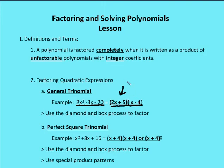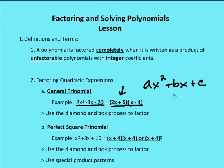Let's talk about ways to factor polynomials. First is factoring quadratic expressions — typically we'll see a general trinomial, and the example here is 2x squared minus 3x minus 20, which is in standard form ax squared plus bx plus c. To factor this general trinomial, you're going to use the diamond and box process, which we've covered in prior chapters.